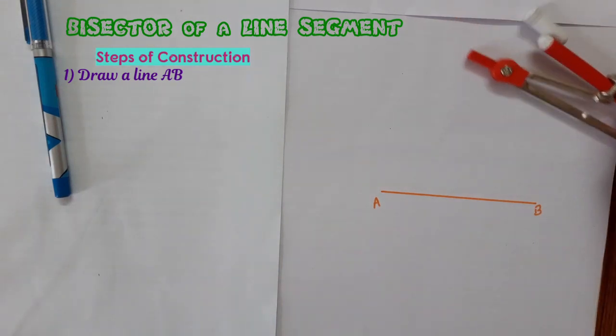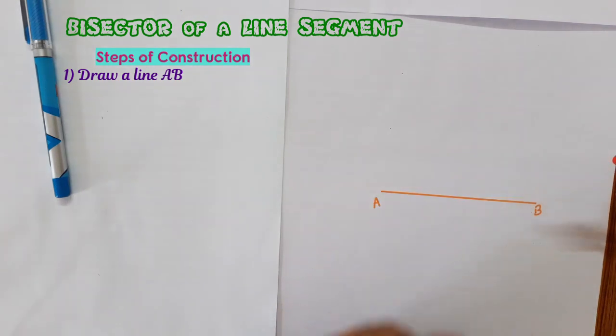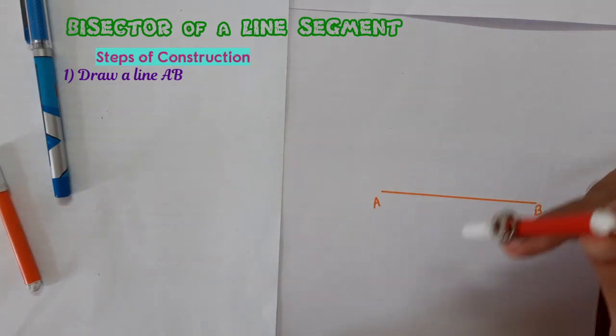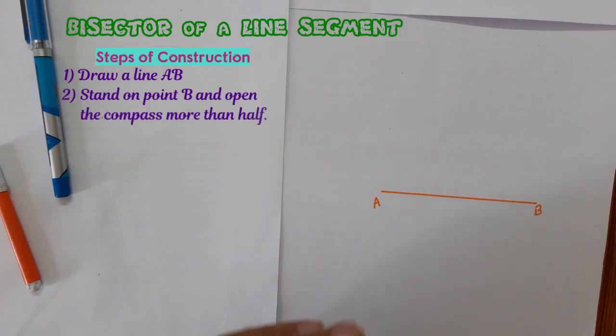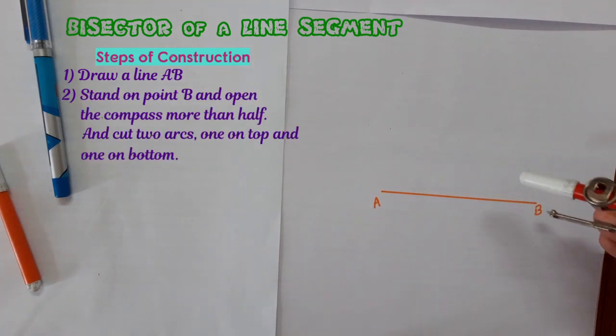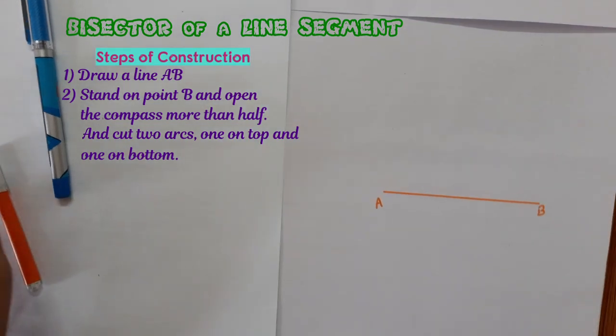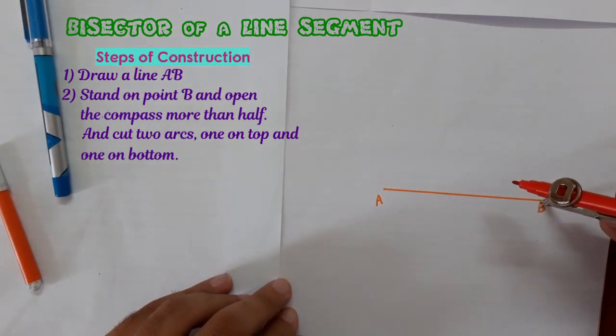And what we need to do is bisector of this line. For the bisector thing, what we need to do for every bisector thing, we need to take more than half of what we need to bisect. For example, of this length, stand on one point.